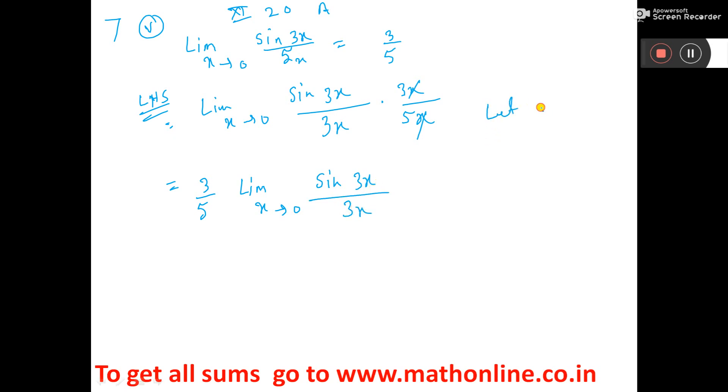Now consider let 3x is equal to z. Then x tends to 0 implies z tends to also 0. Because if you put x equal to 0 here, then 3 into 0 is 0. So z tends to 0.